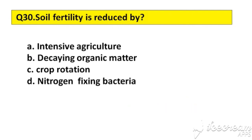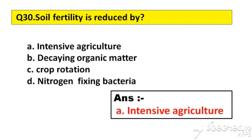Question number 30. Soil fertility is reduced by. Option A: Intensive agriculture. B: Decaying organic matter. C: Crop rotation. D: Nitrogen fixing bacteria. The right answer is option A, Intensive agriculture.